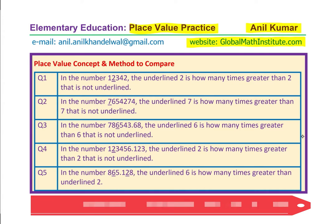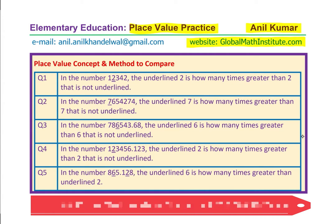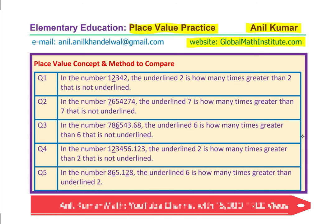Here are five questions for you. I'd like you to read these questions, pause the video, and answer them. The questions are based on the number 1, 2, 3, 4, 2, where the first 2 is underlined. The underlined 2 is how many times greater than the 2 that is not underlined. So we are comparing the place value of two numbers in the given number.